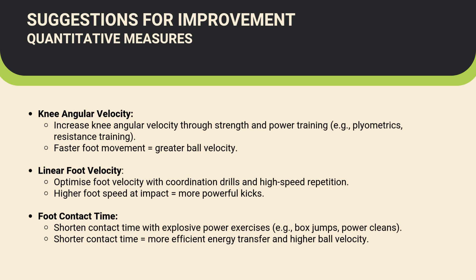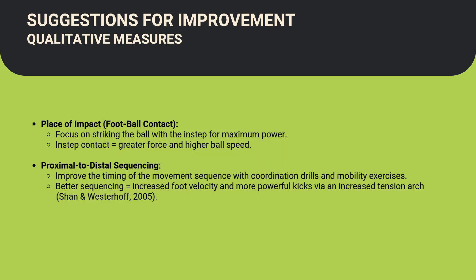To increase knee angular velocity, this can be achieved through strength and power training — for example, plyometrics or resistance training. For linear velocity, we want to optimize foot velocity with coordination drills and high-speed repetition, as higher foot speed at impact equals more powerful kicks. To shorten contact time with the ball, explosive power exercises such as box jumps, broad jumps, and power cleans are recommended. For foot-to-ball contact, striking the ball with the instep provides greater force and velocity. For proximal to distal sequencing, improving the timing of movement sequencing through coordinated drills and mobility exercises results in increased foot velocity and more powerful kicks via an increased tension arc.